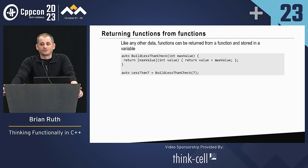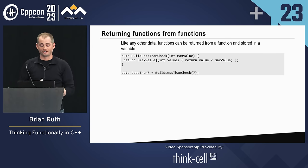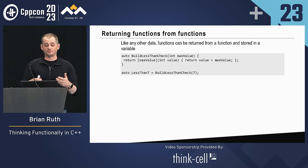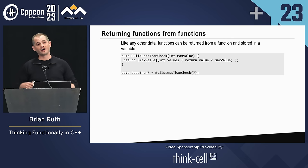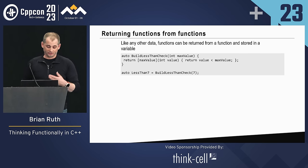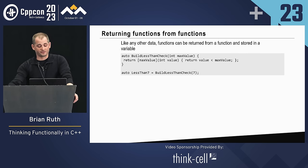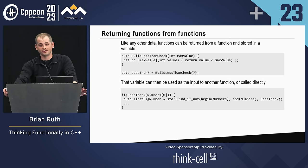You can also return functions from functions. Like any other data, a function can be returned from a function and stored in a variable. Here we've got a function that actually builds a checker — instead of just hardcoding less_than_five, we can build something that checks less_than_seven or less_than_100. We've got our build_less_than_seven, and now we've got a function we can call that checks less than seven — you can call that directly or pass it to another algorithm.